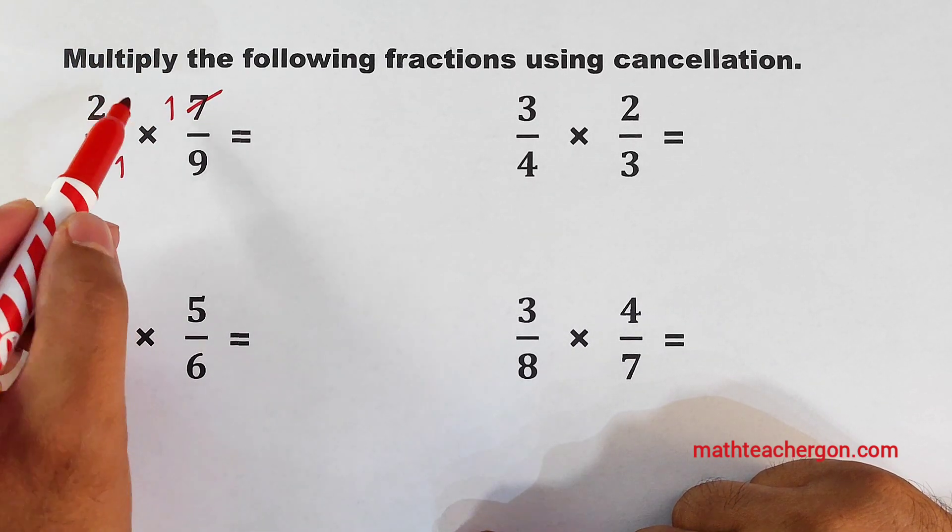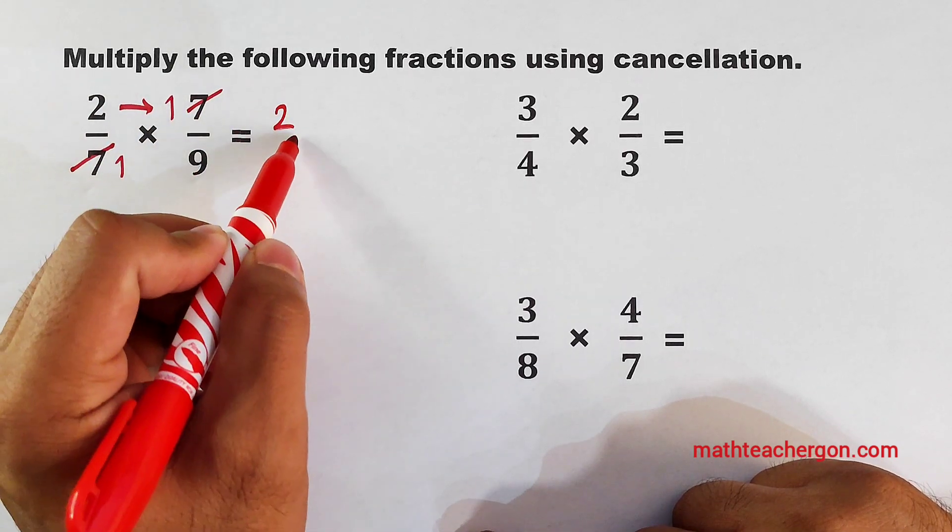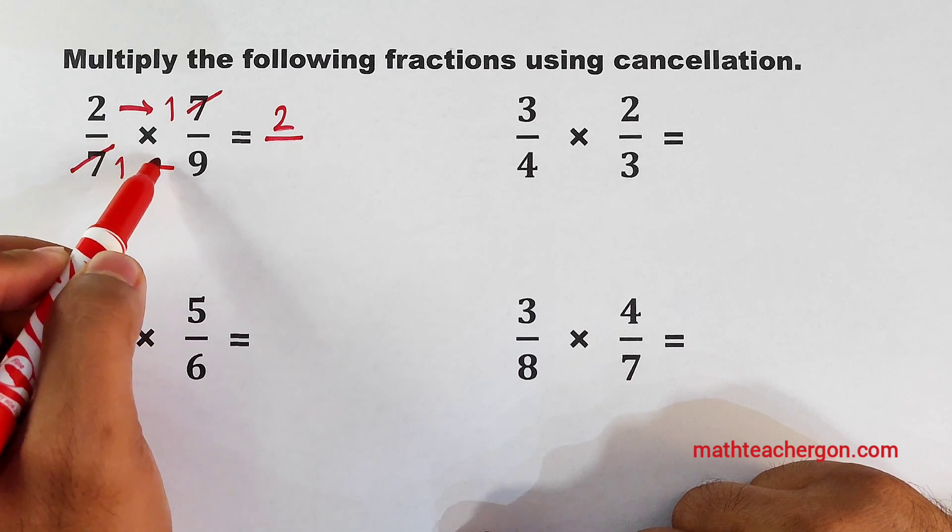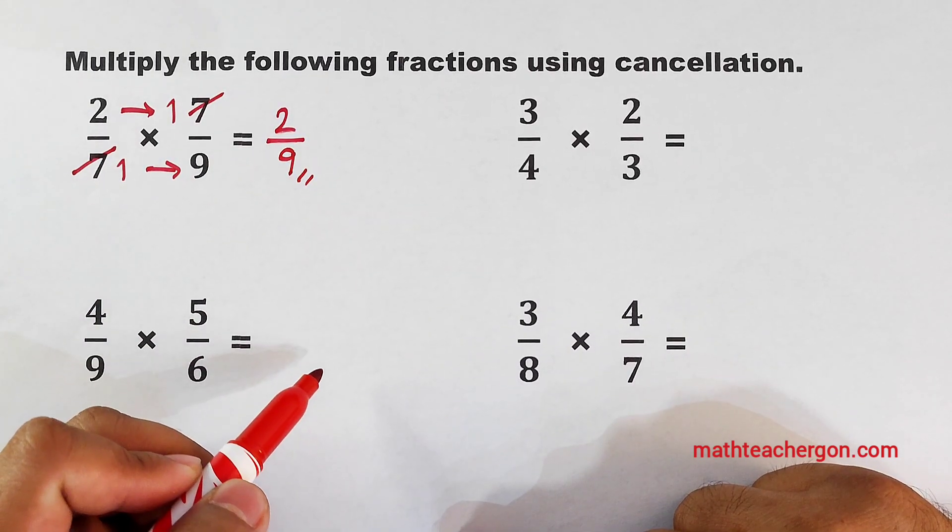And what will happen is you will proceed with multiplication. We have 2 times 1, which is equal to 2, over 1 times 9, that is equal to 9. And this is the answer for this problem.